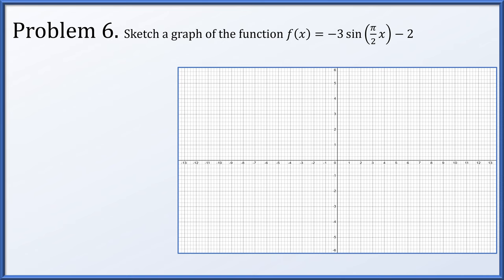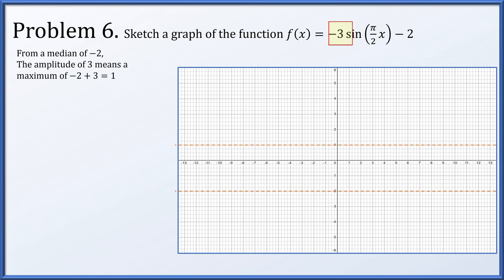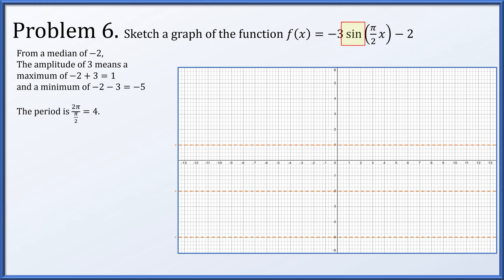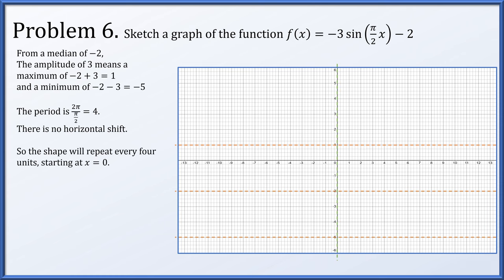Next, let's sketch a graph of f(x) = -3sin(π/2·x) - 2. The -2 gives us our median value. The absolute value of -3, or 3, is our amplitude. So from our median of -2, if we go up 3 units, there's our maximum of 1. And from the median, if we go down 3 units, there's our minimum of -5. The period is 2π divided by π/2, which is 4. There's no horizontal shift, so starting at x = 0, we have a period of 4. Every 4 units we repeat, giving us guidelines representing the periods and the maximum, median, and minimum values.